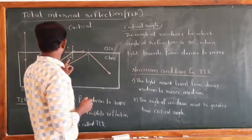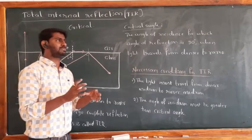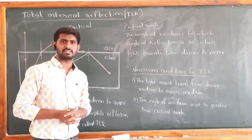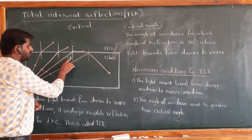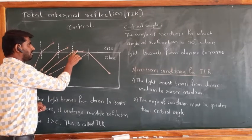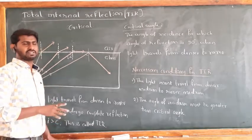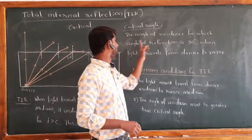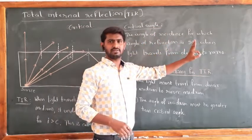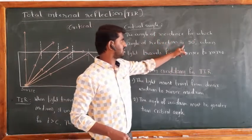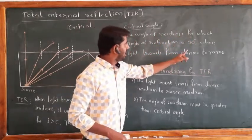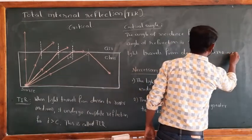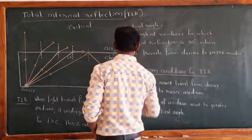What is the critical angle? It is a special case of the angle of incidence. For a particular angle of incidence, we get a 90-degree angle of refraction — that is the critical angle. The angle of incidence for which the angle of refraction is 90 degrees, when the light travels from denser to rarer medium, is called the critical angle.